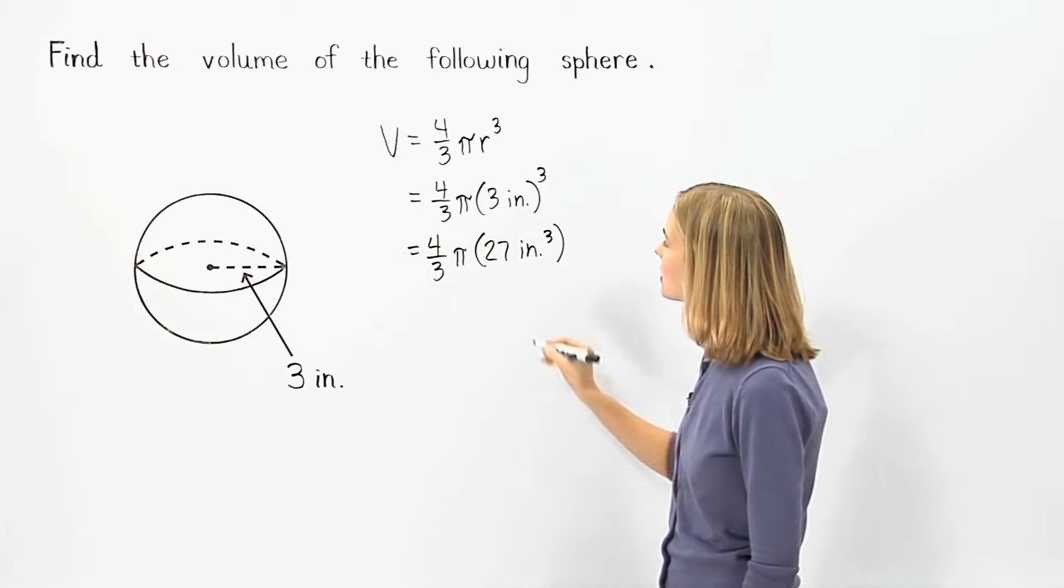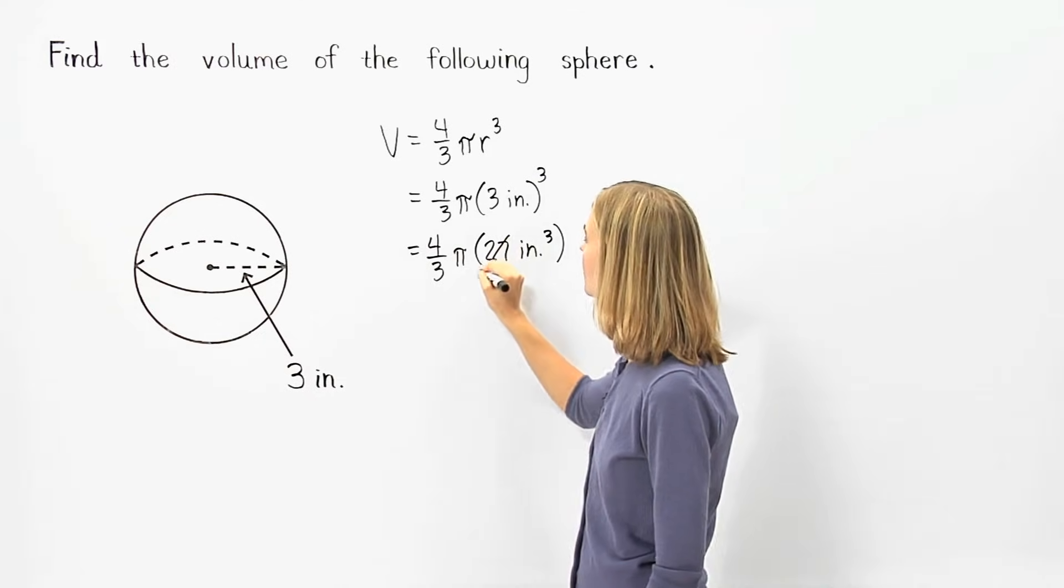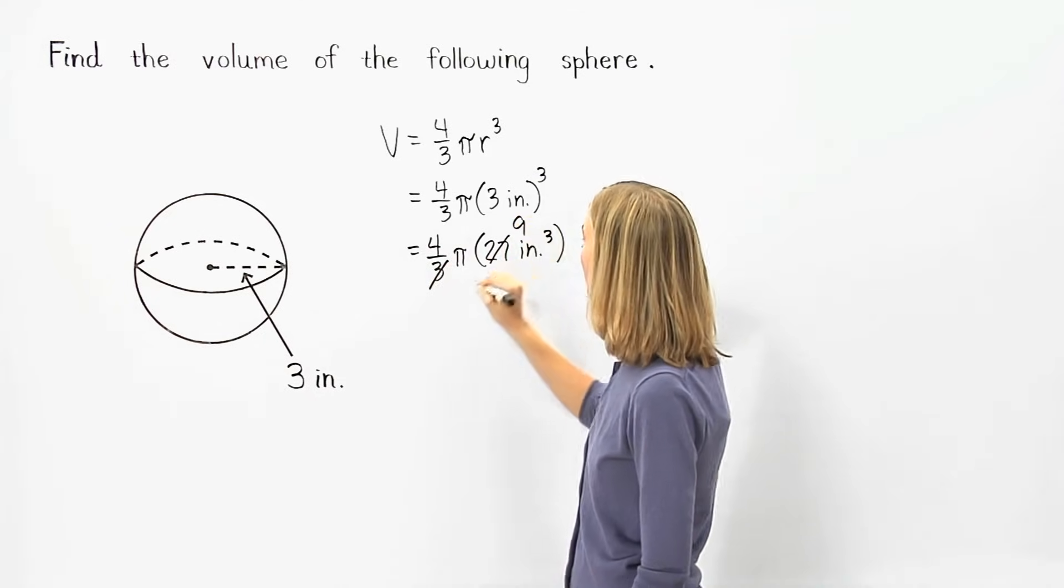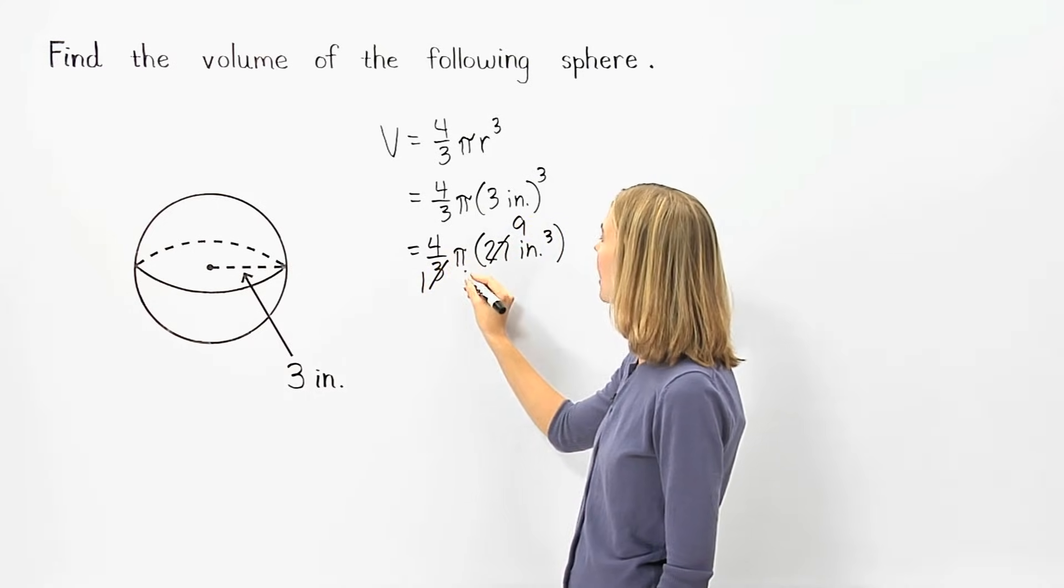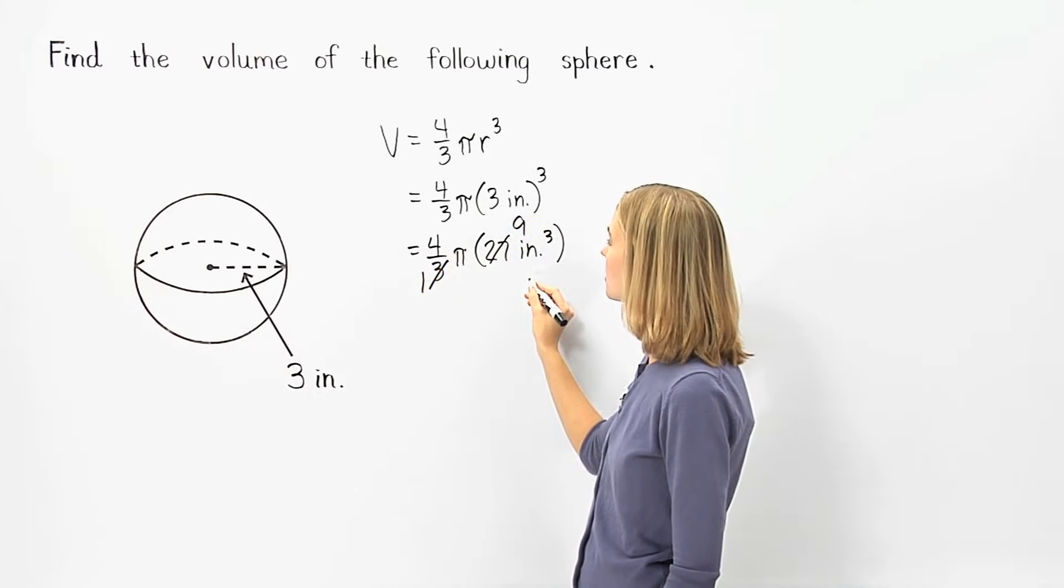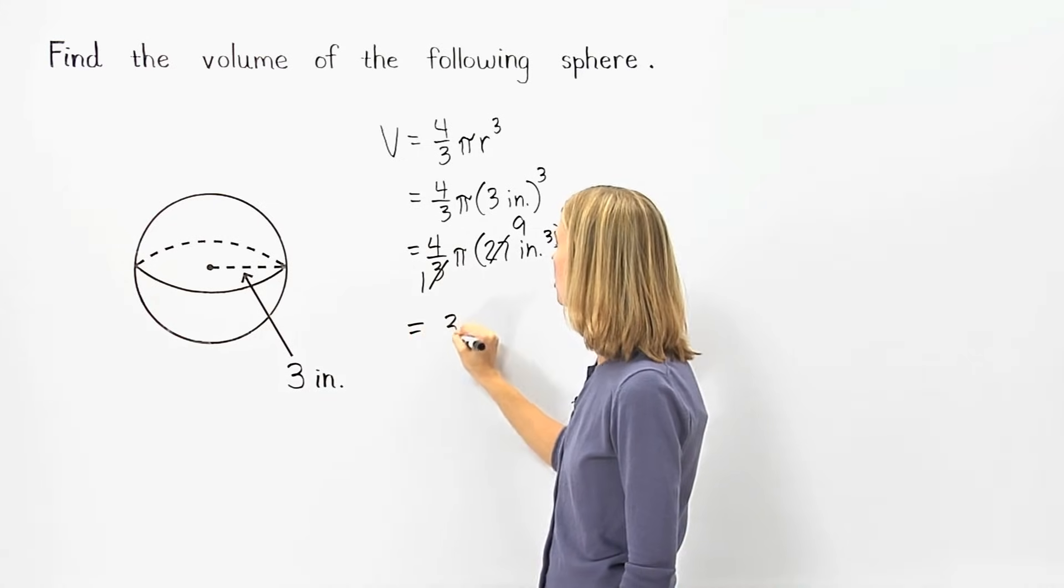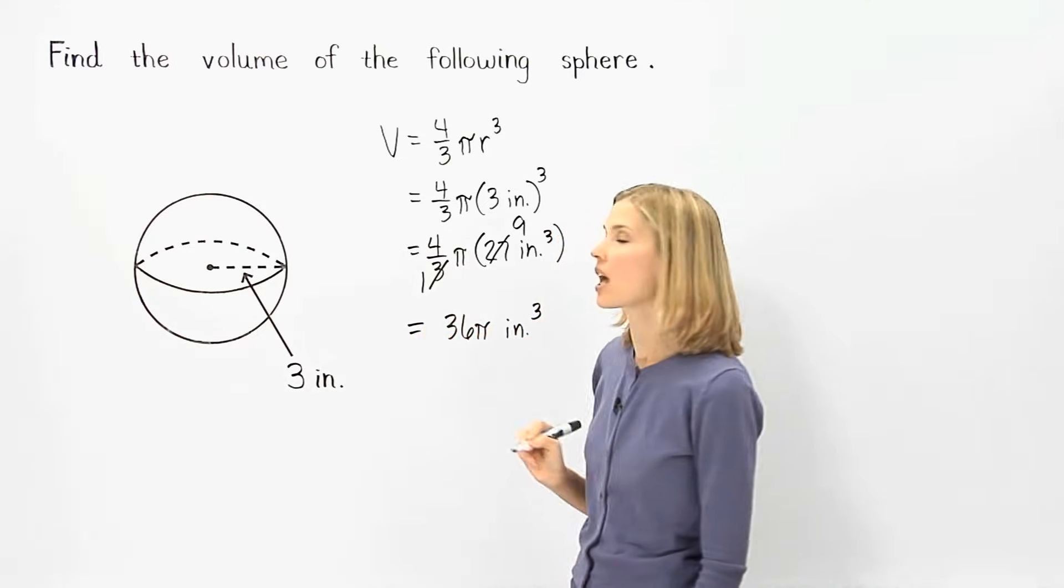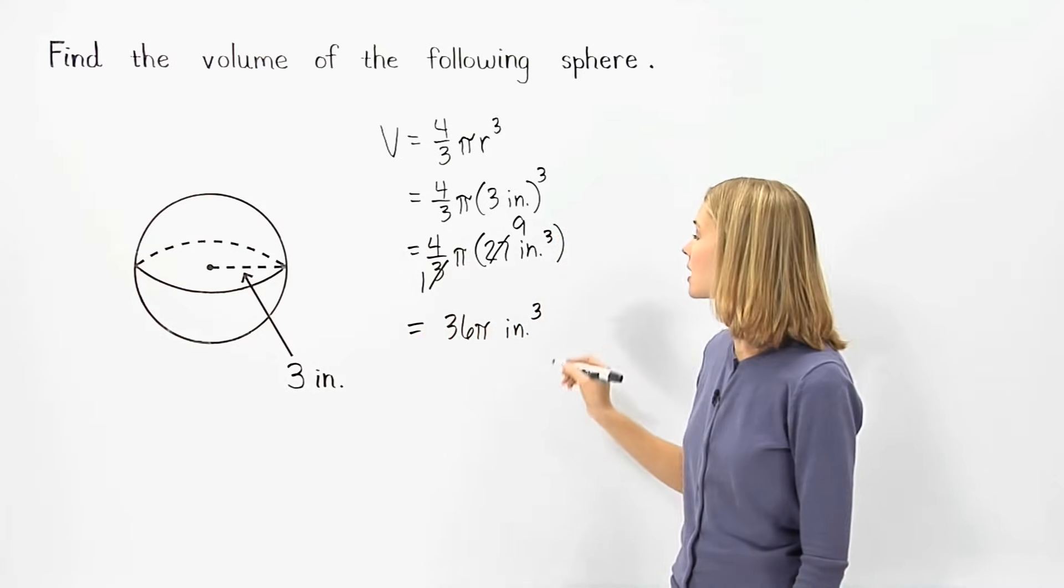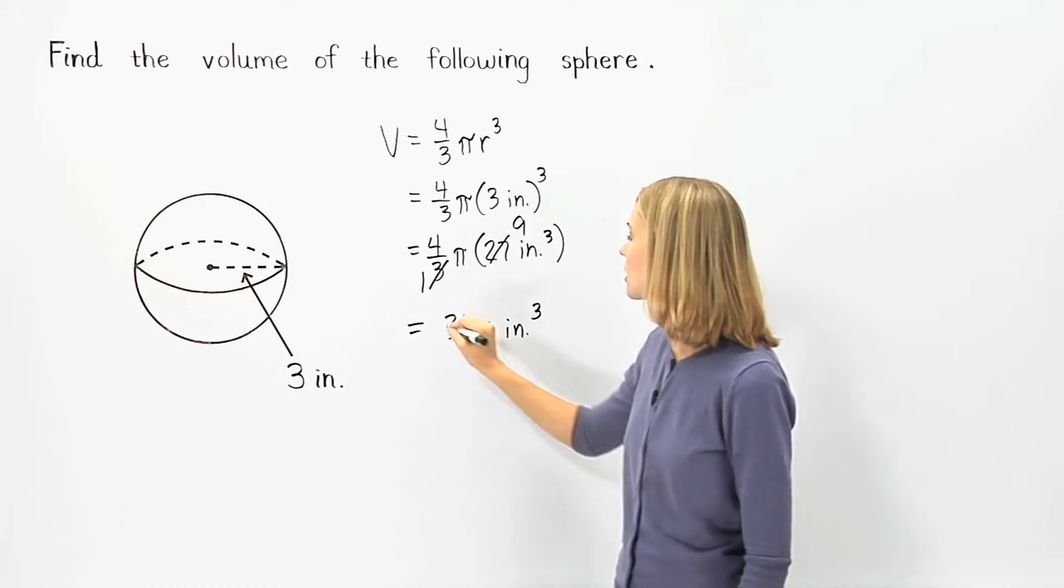Next, notice that the twenty-seven and three cross-cancel to nine and one. And we have four times pi times nine inches cubed, which simplifies to thirty-six pi inches cubed. So one way to write the volume of the given sphere is thirty-six pi cubic inches.